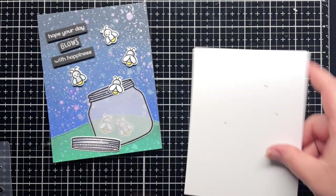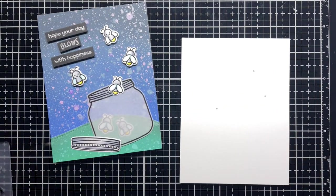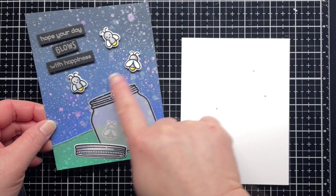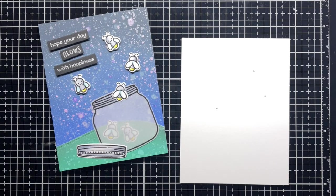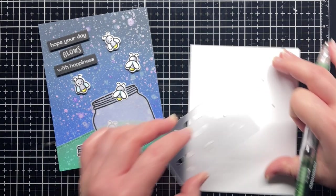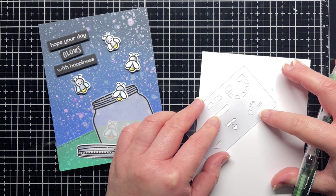To start, I use the template I created in the first video to trace the holes of my card panel onto an A2 panel of white cardstock. Then I center my craft stencil over each traced dot and trace the outline of the sticker.